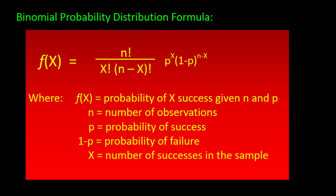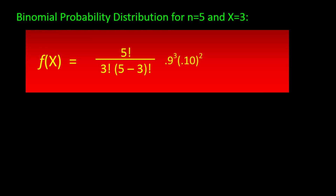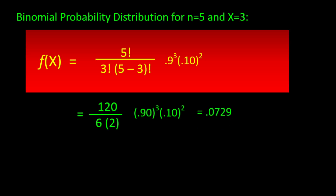The binomial distribution formula has all the components of the combination formula plus the probability of a particular sequence, all rolled into one. To compute it: first take n! / (x! × (n−x)!), then multiply by P^x × (1−P)^(n−x), where n is the total number of observations and x is the number of successes. For our example with n = 5, x = 3, and P = 0.9, we get 5! / (3! × 2!) × 0.9³ × 0.1² = 0.0729 — exactly the same result as before.